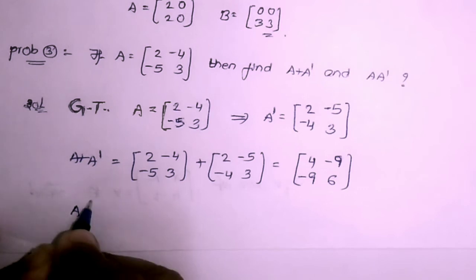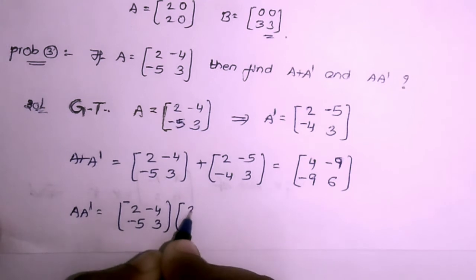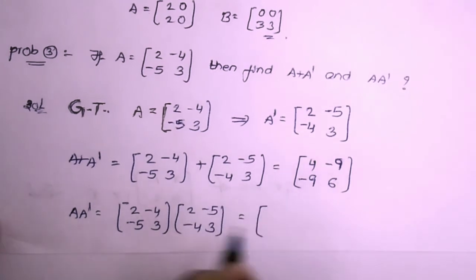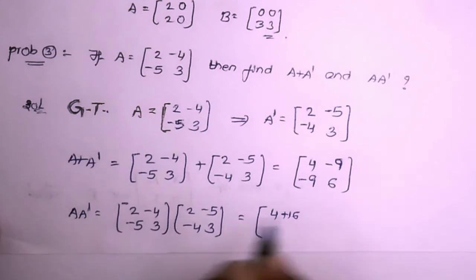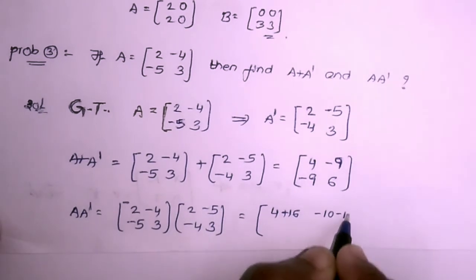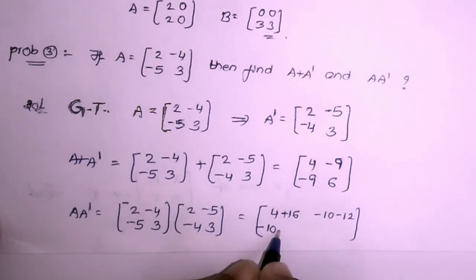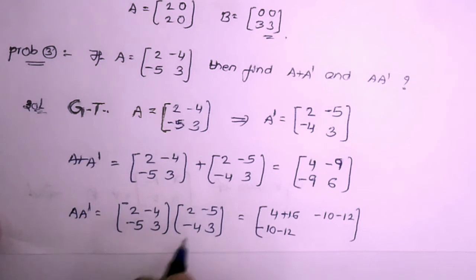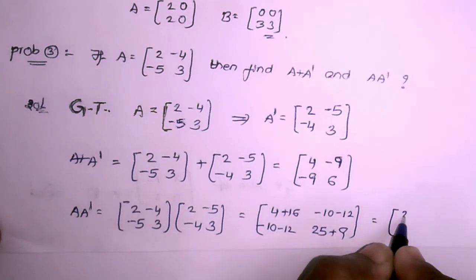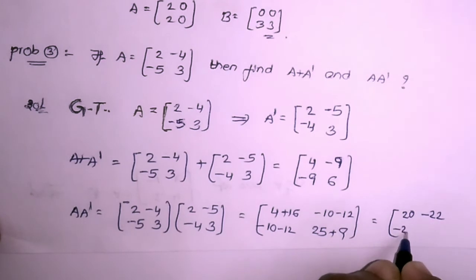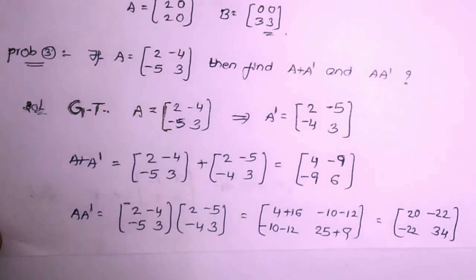Now computing A · A': [[2,-4],[-5,3]] times [[2,-5],[-4,3]]. First row by first column: 2×2 + (-4)×(-4) = 4+16 = 20. First row by second column: 2×(-5) + (-4)×3 = -10-12 = -22. Second row by first column: (-5)×2 + 3×(-4) = -10-12 = -22. Second row by second column: 25+9 = 34. So A·A' = [[20,-22],[-22,34]].